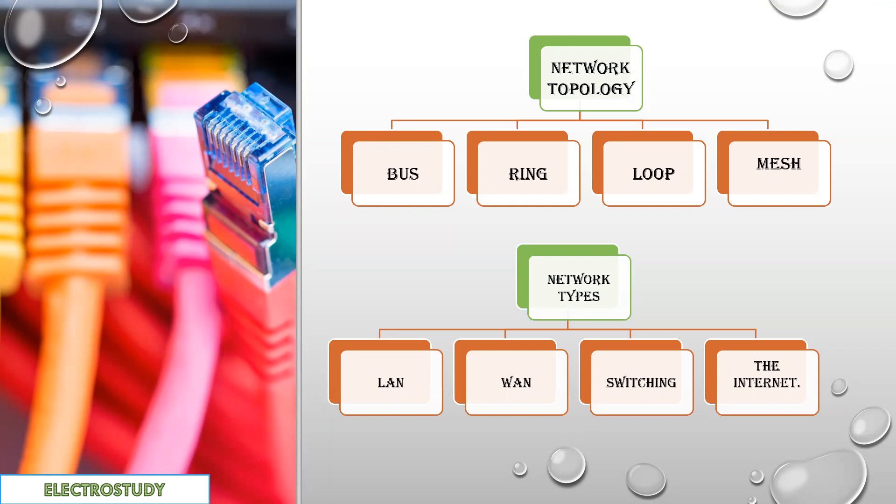Here are the different network topologies available: bus topology, ring topology, loop topology, and mesh topology. We will also be covering different network types such as LAN, WAN, internet, and also about switching technologies.